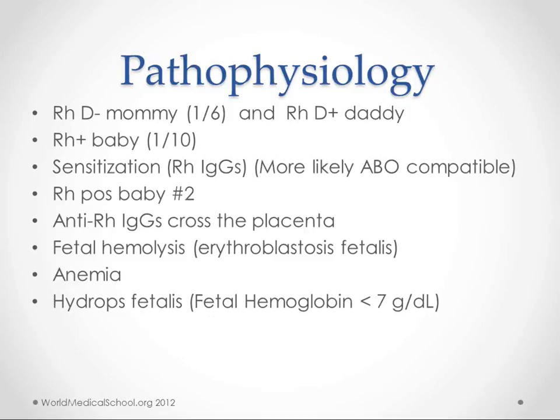This usually doesn't have much effect on the baby, because the mother is just building this immunity. It doesn't really cross the placenta enough to cause any problems for the first baby. But then this RH negative mom and the RH positive dad get together again and have another RH positive baby.